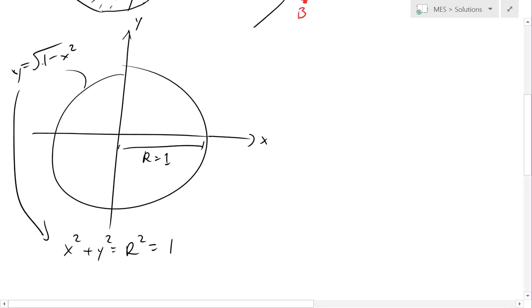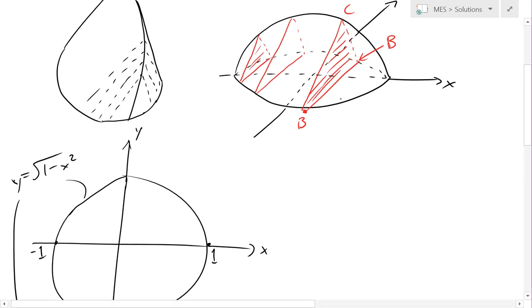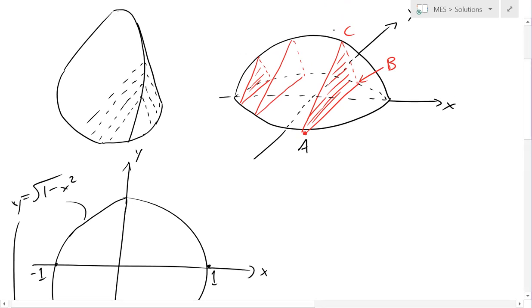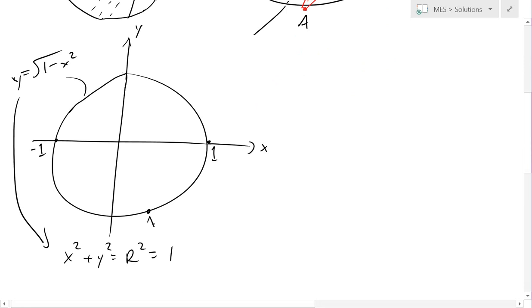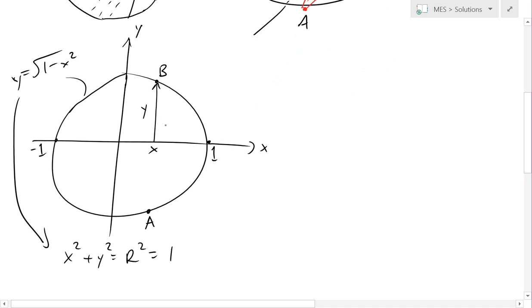It's plus or minus square root 1 minus x squared, but we're only going to consider the top part. The radius is 1, and this point is negative 1 across. So on this side right here, this is our A. And now this side right here is our B. And this distance right here is y. And this is the point x.